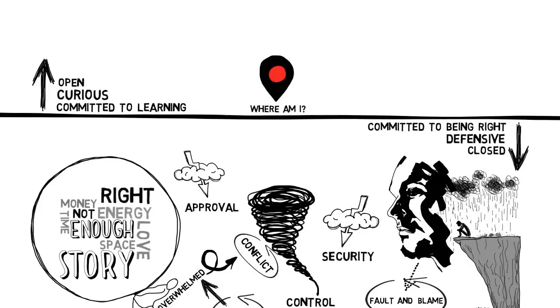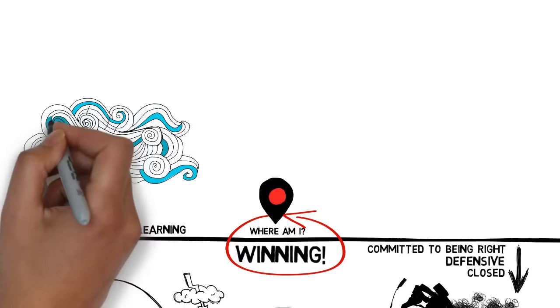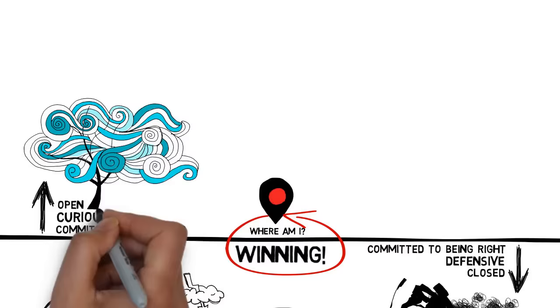When people are above the line, they believe that learning and growing are more important than being right. They believe that all people and circumstances are their allies, here for their growth. They believe that from a distance, almost everything is funny.